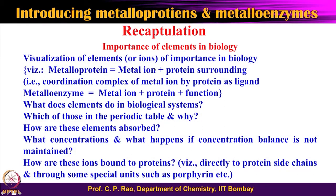During the past several lectures, I tried to give you basics of the elements and their importance in biological systems. First, metalloproteins: I tried to give you a picture of a metal ion surrounded by the protein, bound by protein side chains. It is basically a coordination complex of a metal ion with a protein as a ligand. You can also define metalloenzyme: the metal ion, the protein surrounding, and the function. I also covered what these elements do in biological systems, which elements in the periodic table are essential for biological processes, why they are essential, and how these elements are absorbed.